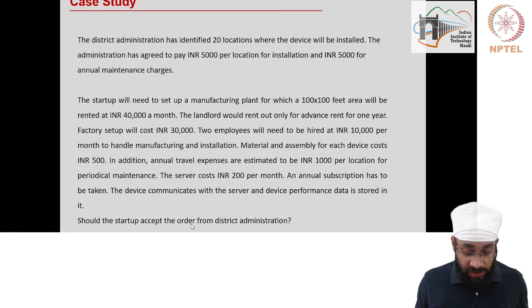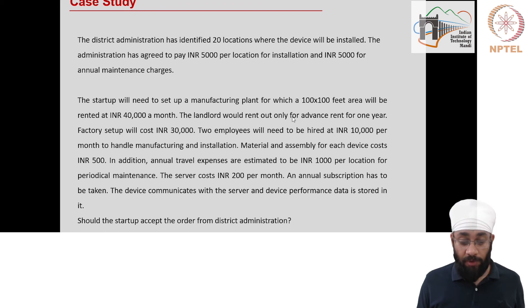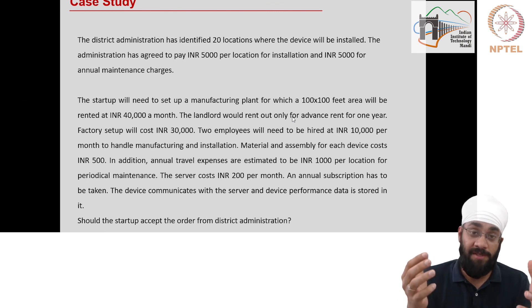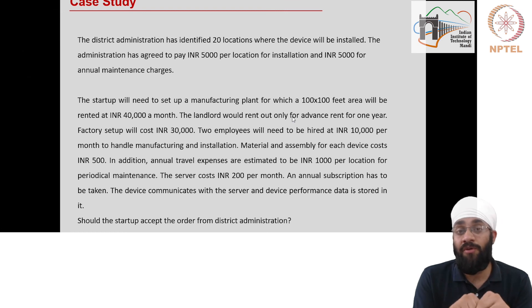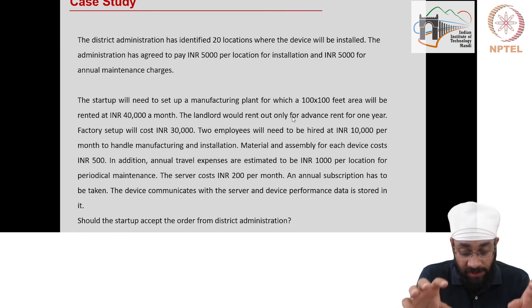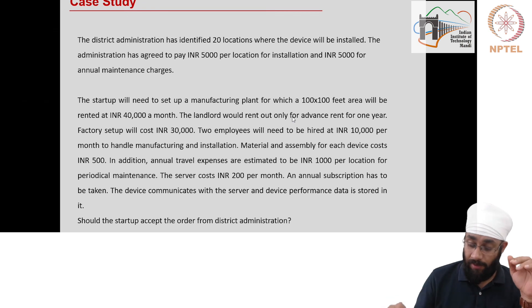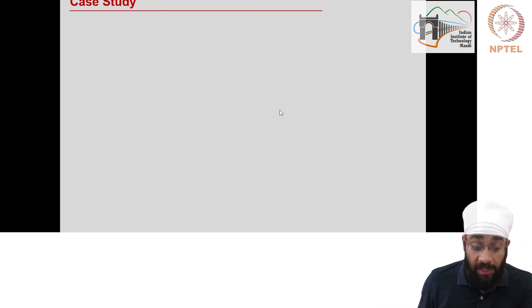So the question was: should the startup accept the order from the district administration? No. Should they make a counter-proposal? Yes — they should ask for a minimum of 100 units, but also make clear they want to make some profit. There's a minimum scale of business needed to make this viable. This analysis can be done for any other business as well — if you have a business proposal, you can use a simple Excel sheet to run these numbers.